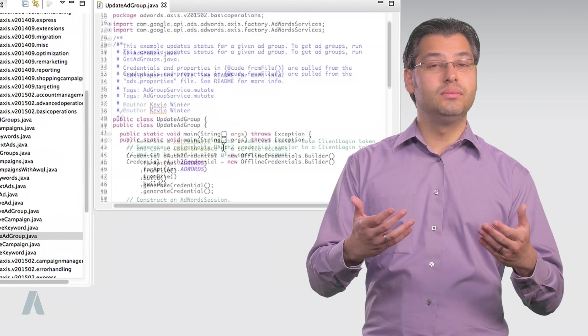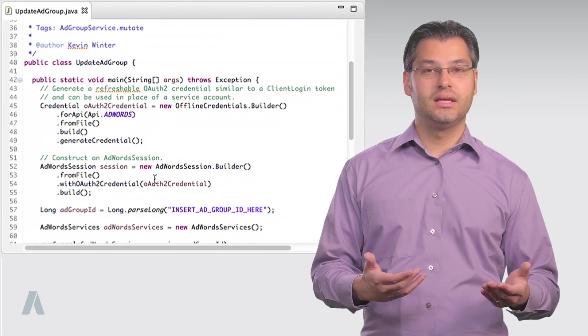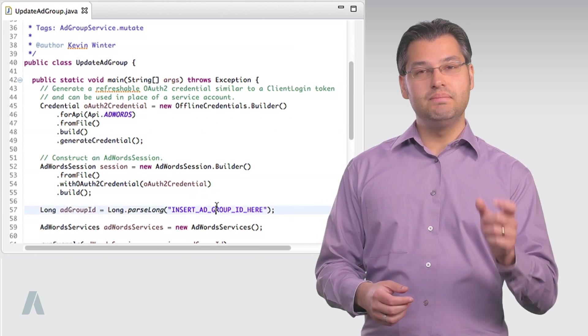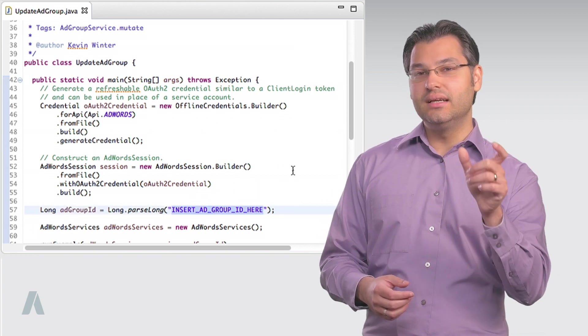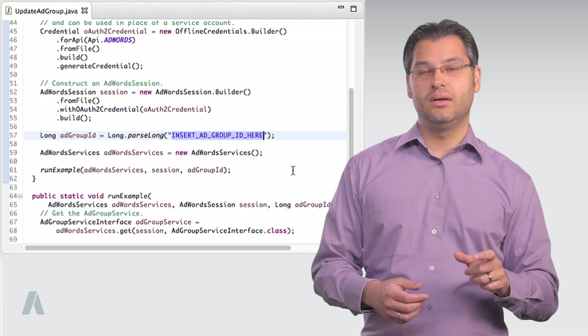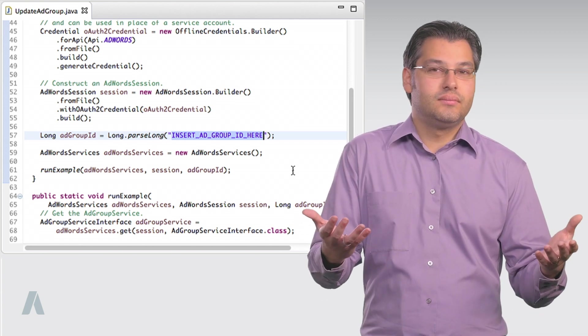We see our typical boilerplate in main. This time, you'll notice that main has a placeholder string for the ID of the ad group. Where would we get that ID?